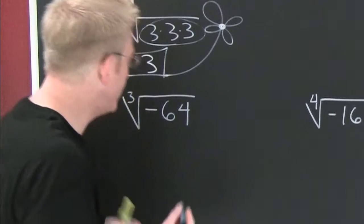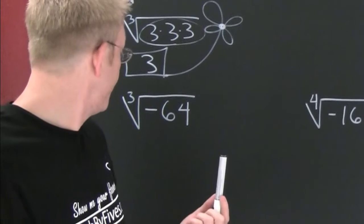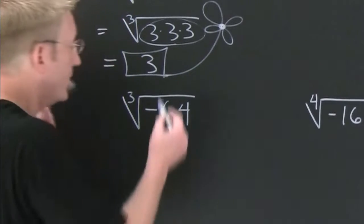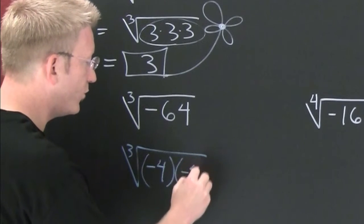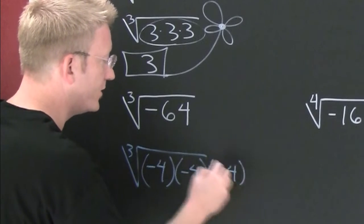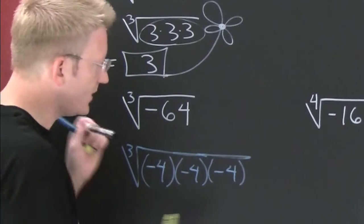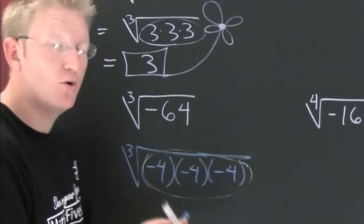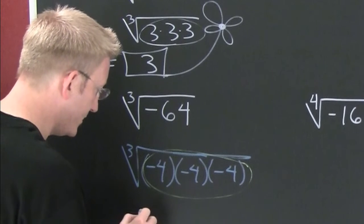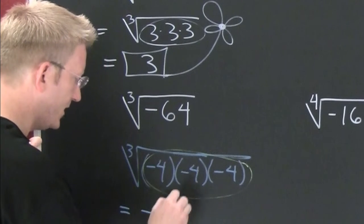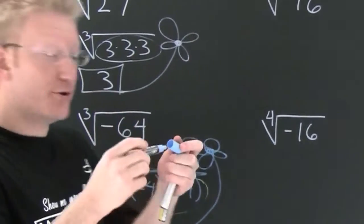Now looking at the cube root of -64. We're looking for a number that multiplies by itself three times to give -64. That breaks down as -4 times -4 times -4. There's a triple right there — three copies of -4 — so one -4 gets to come out. The cube root of -64 is -4.